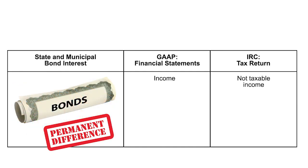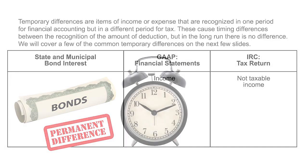State and municipal bond interest income is income on the financial statements, but it's not taxable income. So that winds up on M1 as a permanent difference as well.